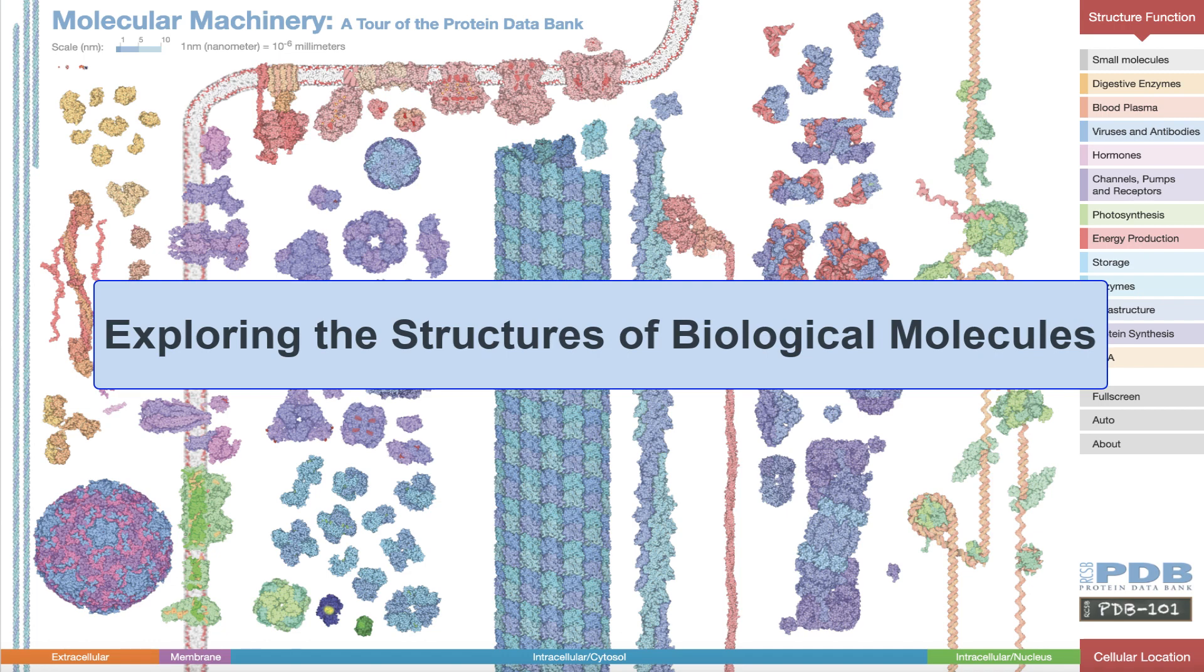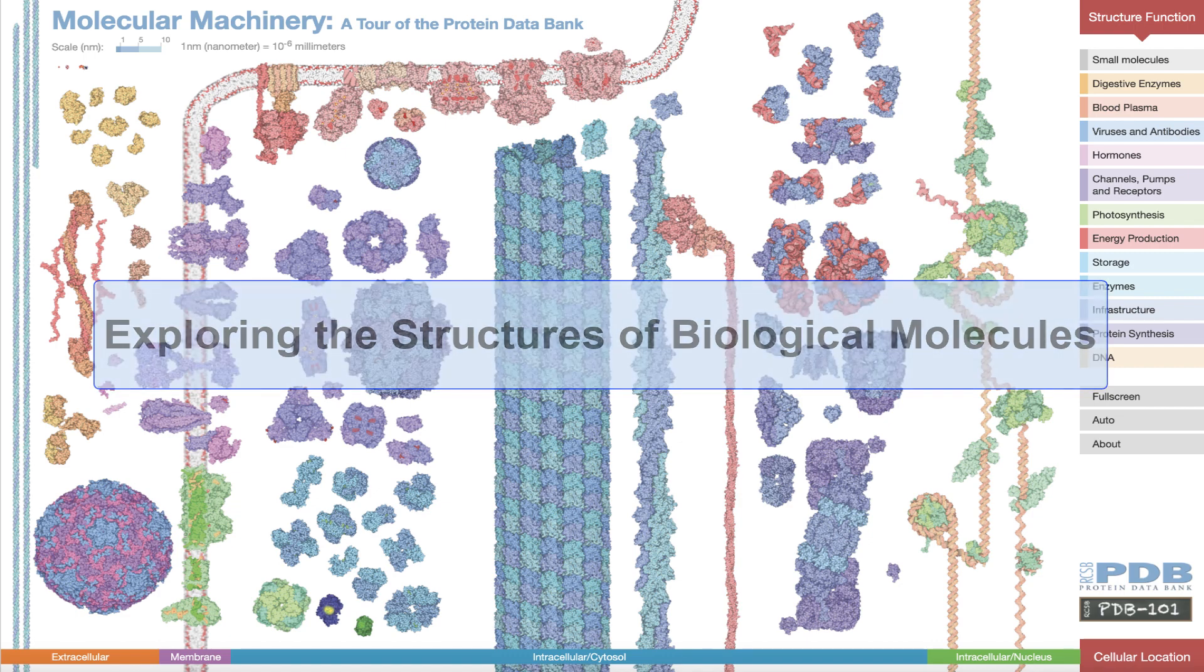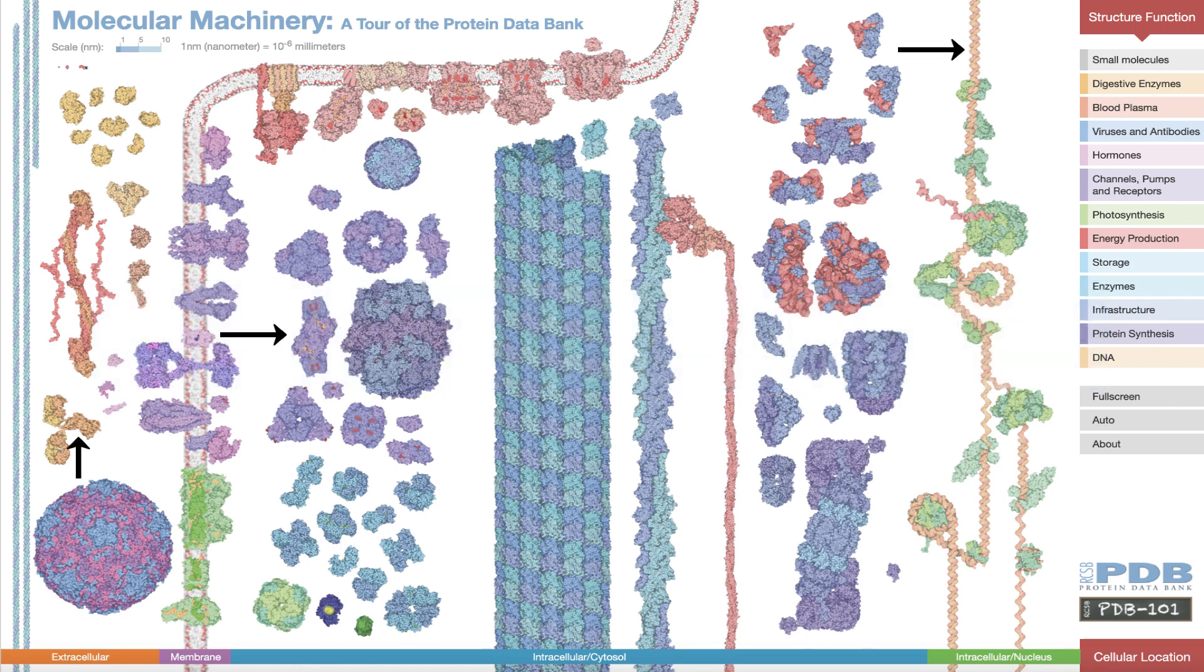The RCSB Protein Data Bank provides free access to the 3D structures of hundreds and thousands of biological macromolecules such as proteins, nucleic acids, carbohydrates, lipids, and their various complexes.